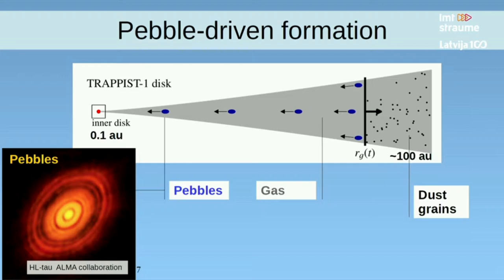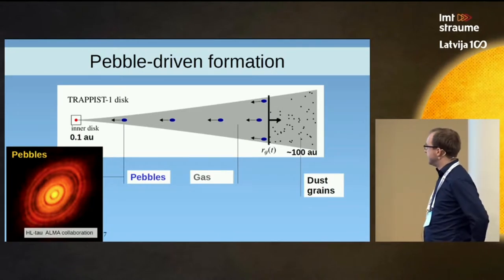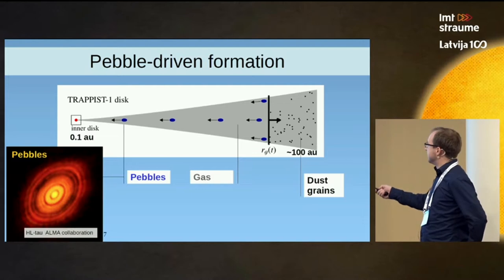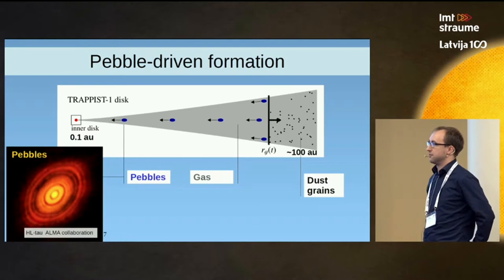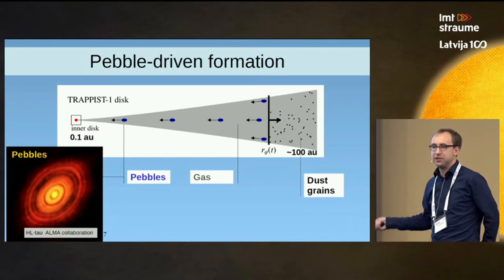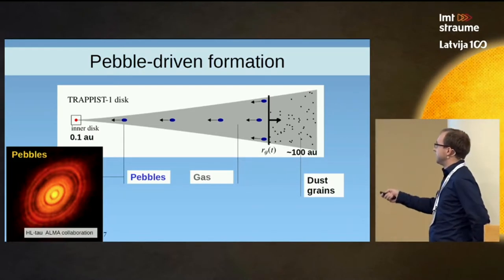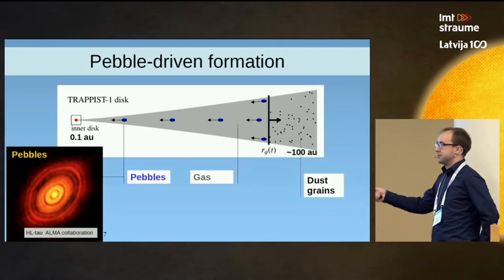So we present an alternative, and in this alternative the formation is being driven by pebbles. What are pebbles? Well, pebbles are the particles that you get when you coagulate — you create your micro-sized dust grains, and then you make the millimeter to centimeter particles, and they drift inwards to the inner disk. So pebbles are also the particles that you see with ALMA when you look at millimeter wavelengths. They are aerodynamically active, so they drift towards the star.